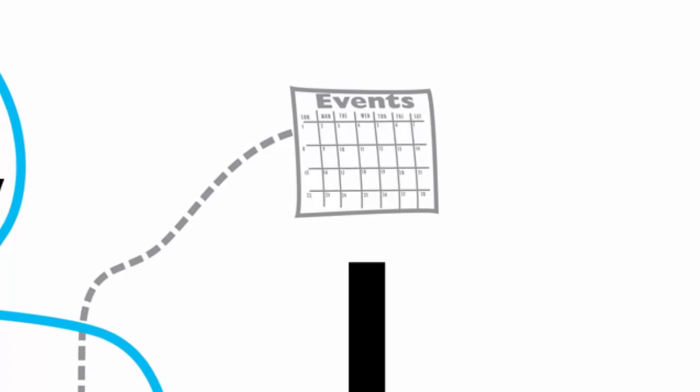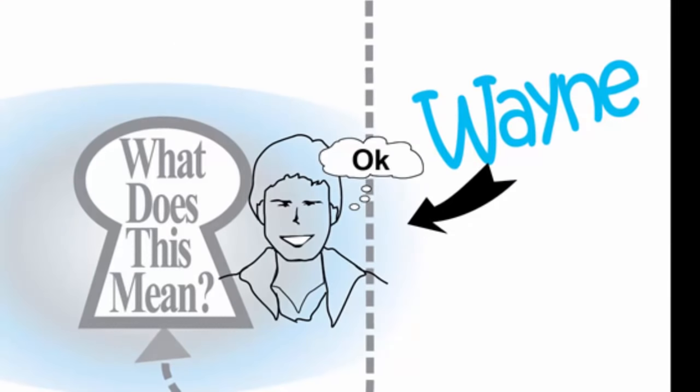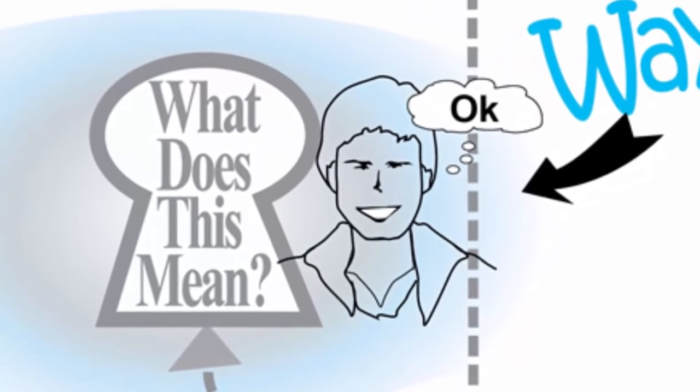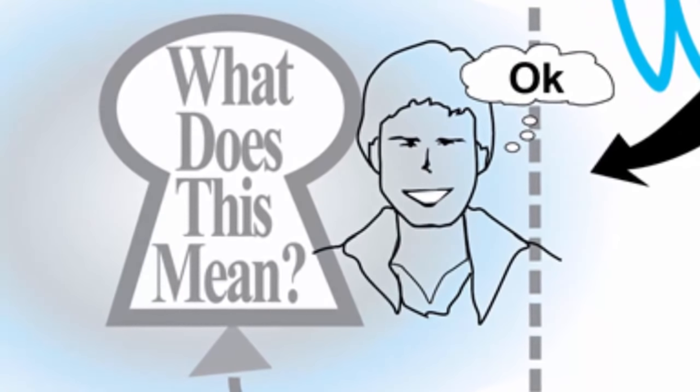Events cannot mean anything until they reach a little organ inside Wayne's brain called the amygdala, represented by this keyhole symbol with the question, what does this mean? The amygdala is constantly searching for meaning to every event.